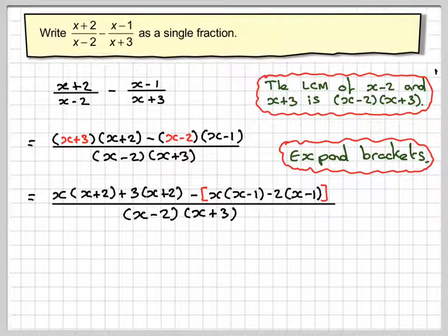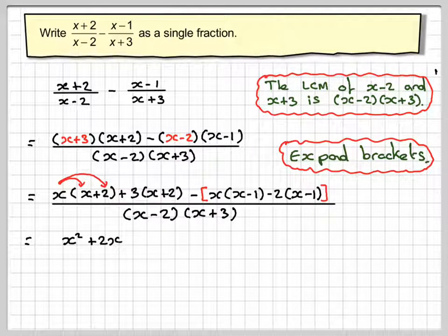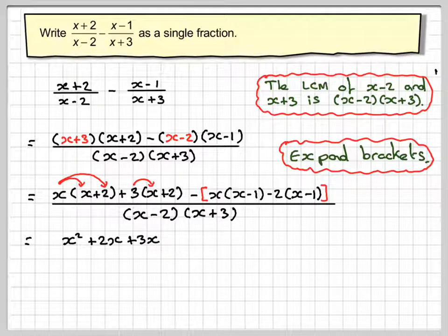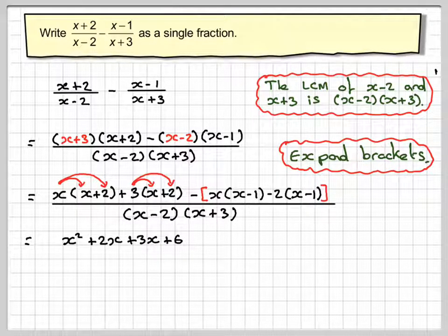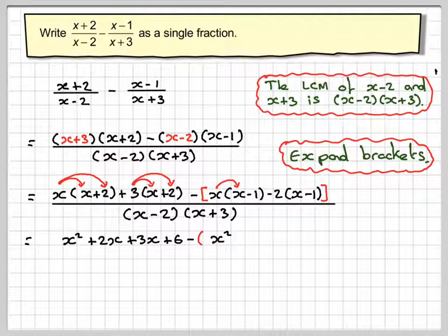And the important thing here is not to do too much in one go. So we're going to do x times x, which is x squared. x times 2, which is 2x plus 3 times x, which is 3x. And then 3 times 2, which is 6. We're still going to keep that bracket in.